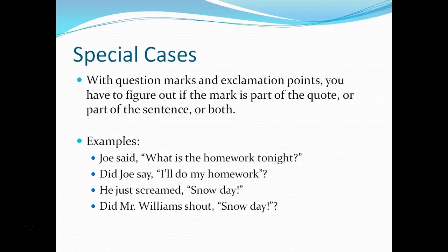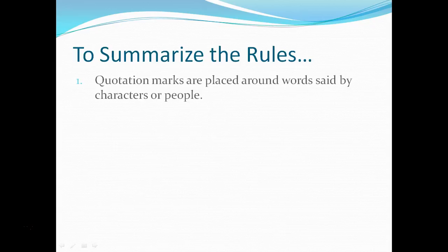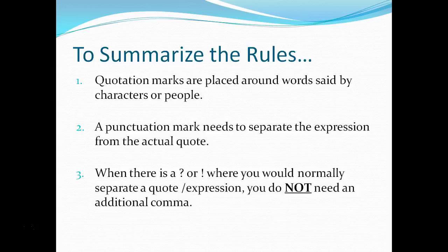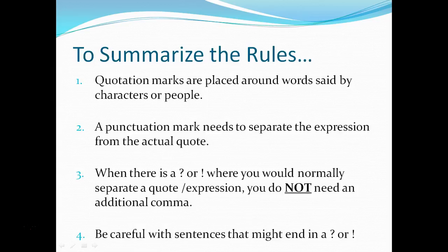To summarize the rules: First, quotation marks are placed around words said by characters or people, whether in dialogue or quoting a source in an essay. Second, a punctuation mark needs to separate the expression from the actual quote. Third, when there is a question mark or exclamation point where you'd normally separate a quote or expression, you don't need to add an additional comma — those marks replace the comma. And be careful with sentences that might end in a question mark or exclamation point, since there can be special cases.